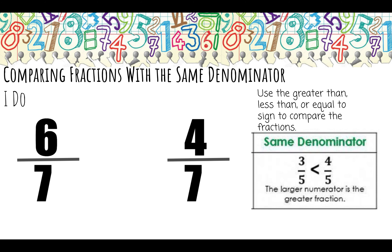Let's look at one more where we have the same denominator. Both denominators are sevenths. In the first fraction I have six-sevenths, and in the second I have four-sevenths. Six-sevenths is greater. If I ate six-sevenths of the cake, I almost ate the whole cake — seven-sevenths would be one entire cake. So six-sevenths is a pretty big fraction, and four-sevenths is less than six-sevenths.